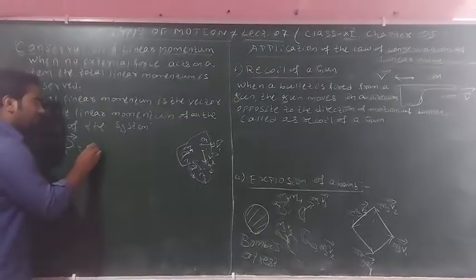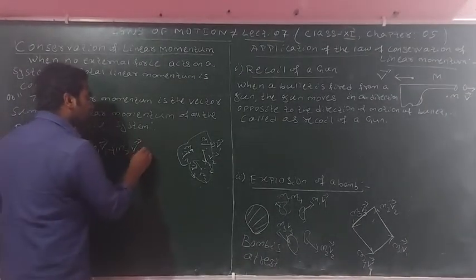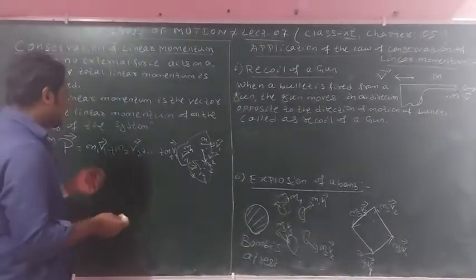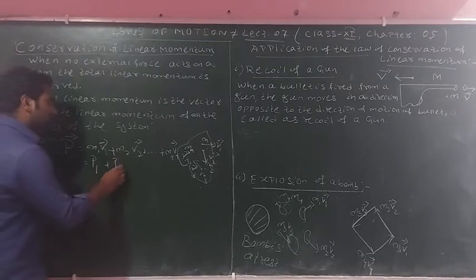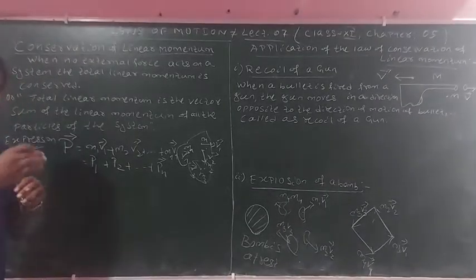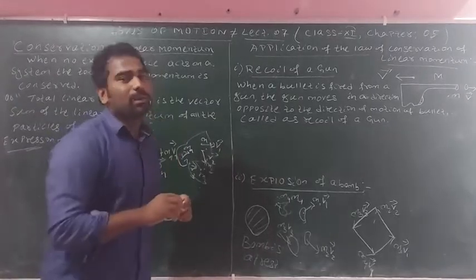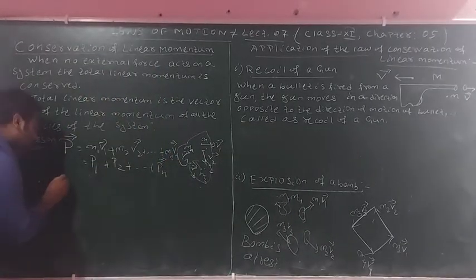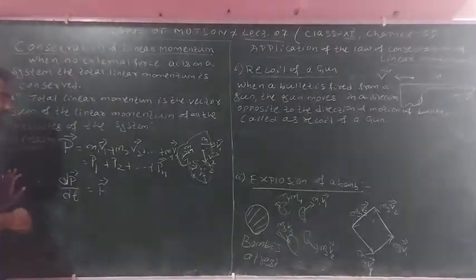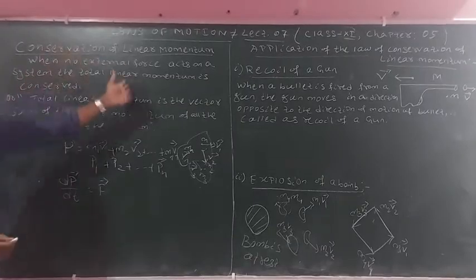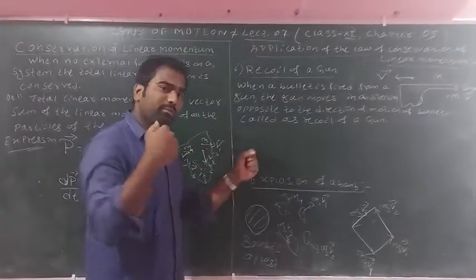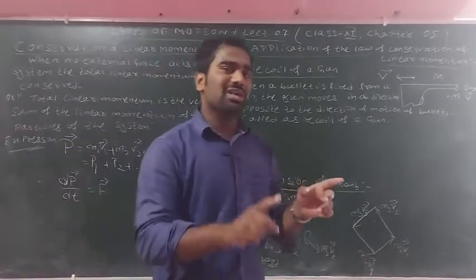The total momentum is the first particle's momentum plus the second particle's momentum, up to the nth particle's momentum. We have studied Newton's second law: the rate of change of momentum is directly proportional to the applied force. That gives us dp/dt equals force. Newton's third law: every action has an equal and opposite reaction.